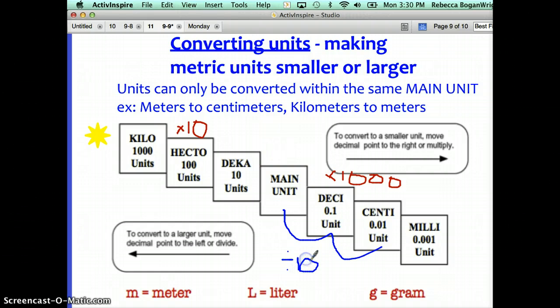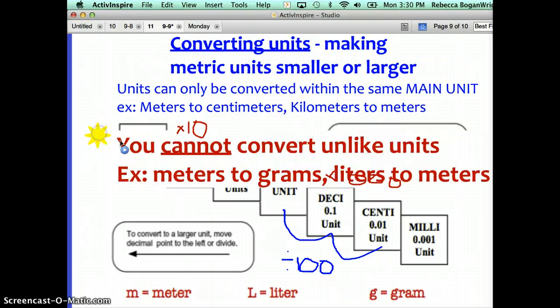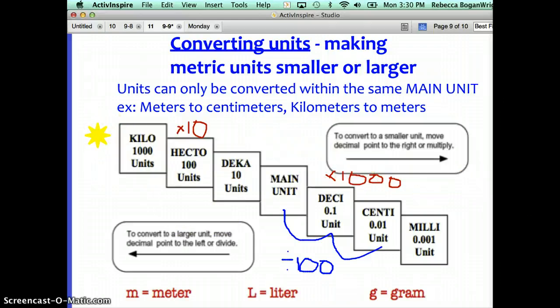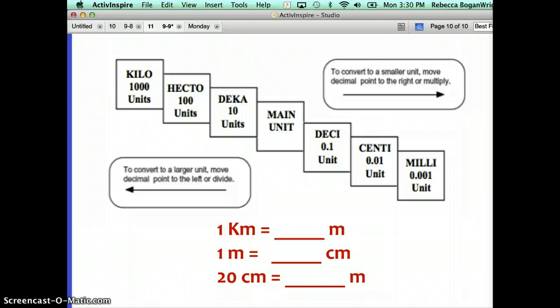Just as something for you guys to know, converting units is what we do when we're making the metric units smaller or larger. The thing to remember about this is that units can only be converted within the same main unit. You can change meters to centimeters or kilometers to meters, but you cannot convert unlike units. You cannot change meters to grams or liters to meters because they're two completely different things. You would never say that you have 12 feet of soda, you would say you have 12 liters of soda, because feet measures distance and not liquid. You have to make sure that when you're converting that you're converting within the same unit. Don't worry too much right now about the conversions because we're going to be doing a lot of practice. We're going to do some easy practice right now.